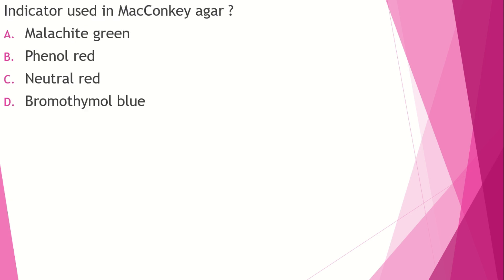Indicator used — very important. Options: malachite green, phenol red, neutral red, bromothymol blue. Malachite green is the indicator used in LJ media as a selective agent. Phenol red is used in Christensen's medium and XLD. Bromothymol blue is used in Simmons citrate media. The answer is neutral red — used in MacConkey agar and DCA.